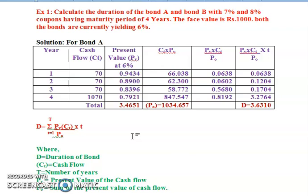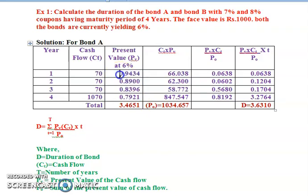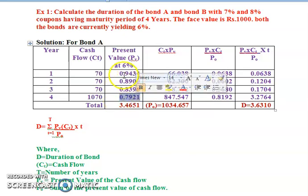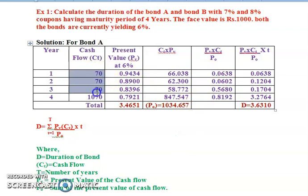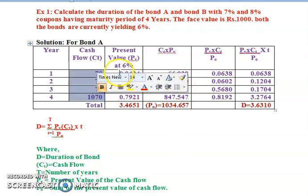For the present value factors at six percent, we take values from the present value factor table. For year one it is 0.9434, for year two it is 0.8900, for year three it is 0.8396, and for year four it is 0.7921.